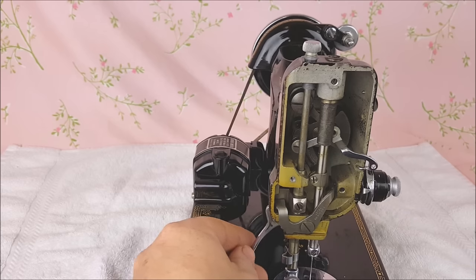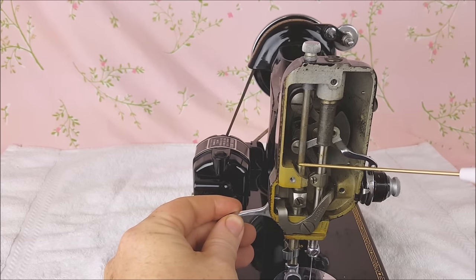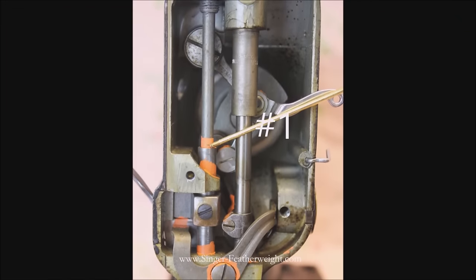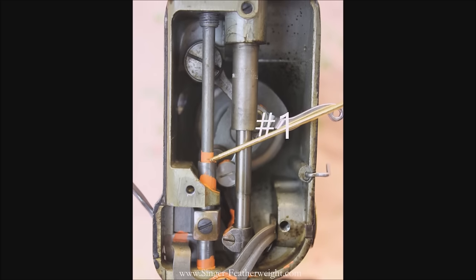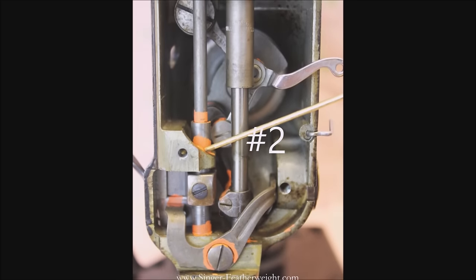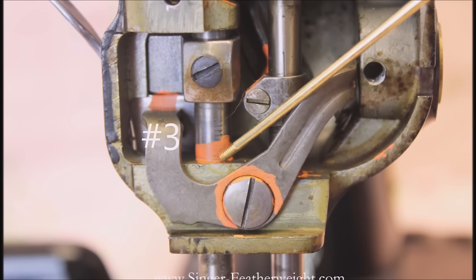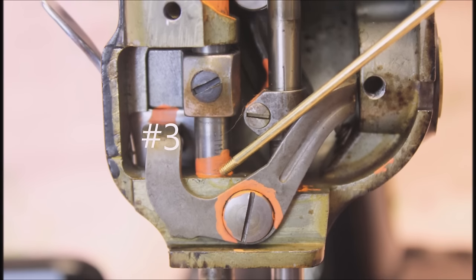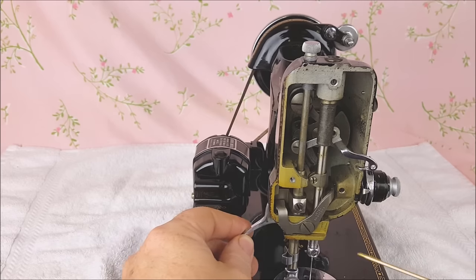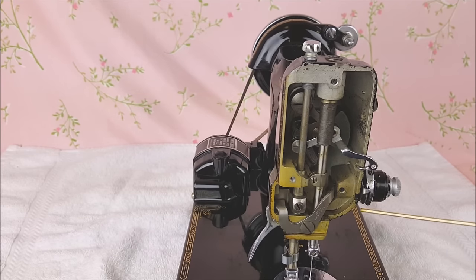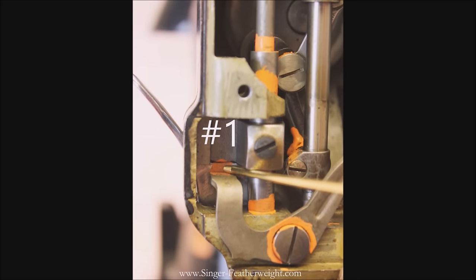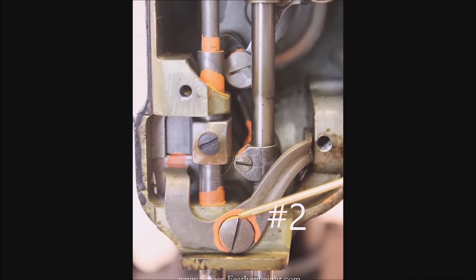This next section is the presser bar and there are three places that need oiled on it, one, two, and three. Then we have two spots coming up here that have to do with the presser bar lifter and the arm that it presses against to release the tension on the tension unit. So there's one spot there and the second spot there.